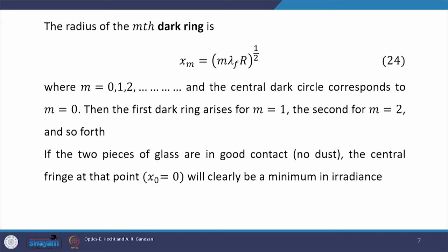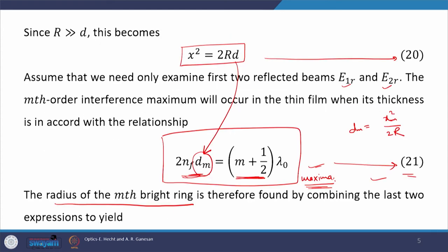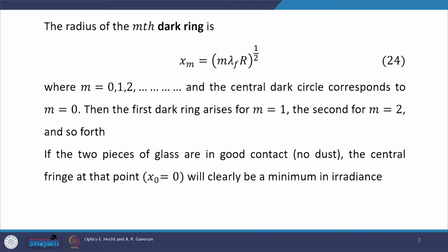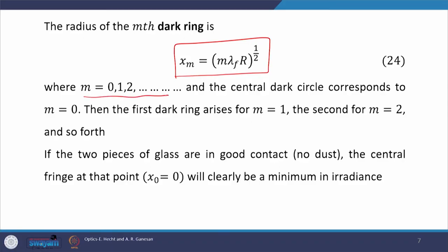Let us now find the radius of the mth dark ring. The condition of minima gives us an integral multiple of wavelength, and from there we get the expression for the radius of the dark ring. Here again, m is an integer, and the central dark circle corresponds to m = 0, because when m = 0, xm = 0, which corresponds to the central dark patch. The first dark ring arises when m = 1, and for the second we substitute m = 2.